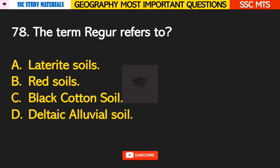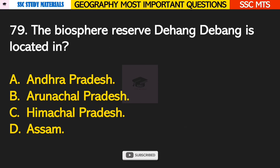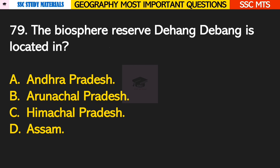Question number 78: the term Regar refers to? Answer C — it refers to black cotton soil. Question number 79: the biosphere reserve Dihang-Dibang is located in? Answer B — it is located in Arunachal Pradesh.